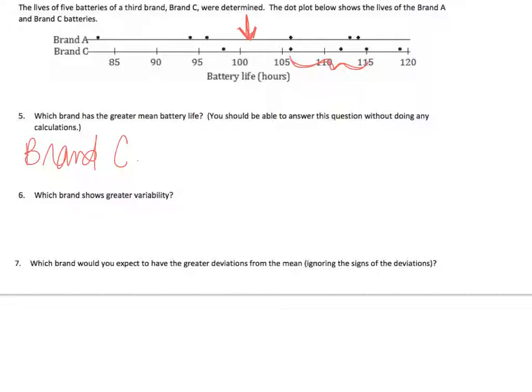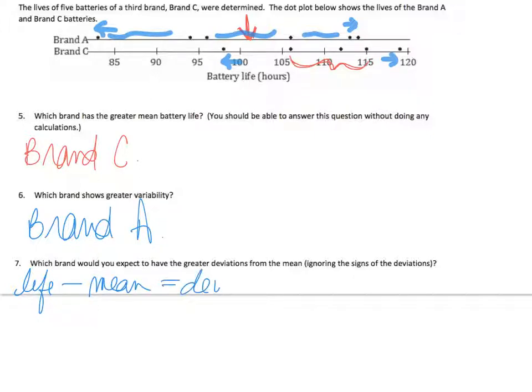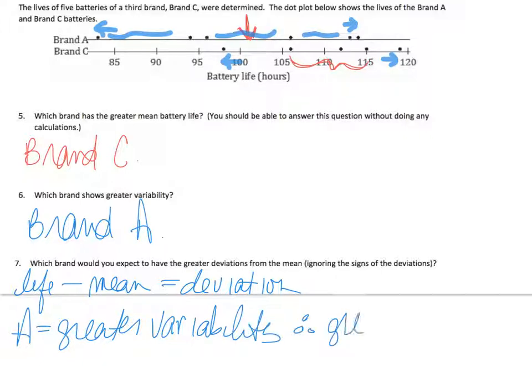Which brand shows greater variability? Well, if I look, brand A, way down here to way up here with lots of space in between the batteries. This one, that's the lowest and the highest without a lot of space. So, I'm going to say that brand A shows greater variability. Which brand would you expect to have the greater deviations from the mean? Ignoring the signs of the deviation. So, we're not going to pay attention to the signs, just the pure numbers. So, if you remember, the deviation is life minus mean equals your deviation. So, which one do you think? I think since brand A has the greater variability, therefore, it's going to have the greater deviation.